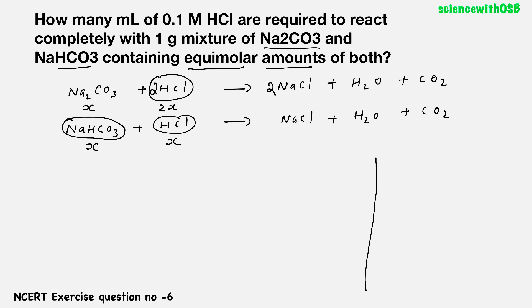What we are supposed to find? How many mL of 0.1 M HCl? We are supposed to find the volume of HCl. And molarity is given. And you know, molarity is what? Number of moles of solute by volume. So molarity is given. If you find number of moles of HCl, you can find the volume of HCl very easily. So our aim is to find the number of moles of HCl required to react completely with Na2CO3 and NaHCO3. So what is that? 2x and x. That is 2x plus x. That is 3x. We can try to find that.